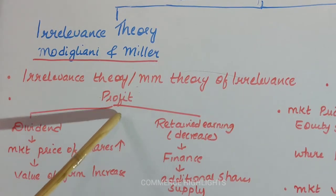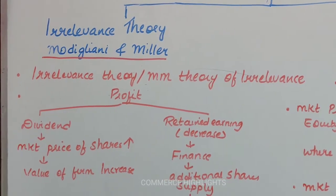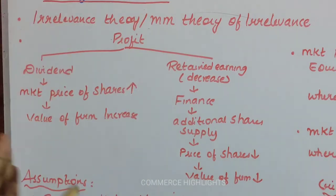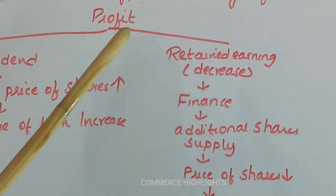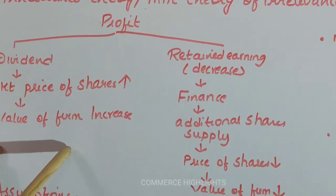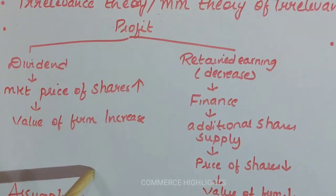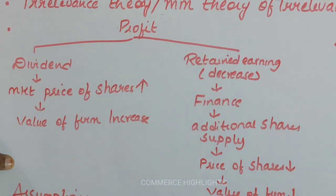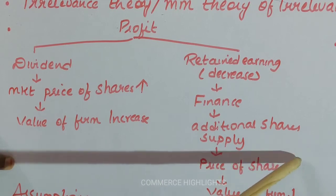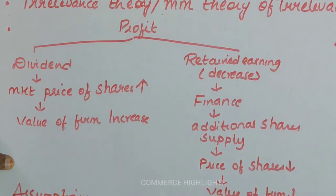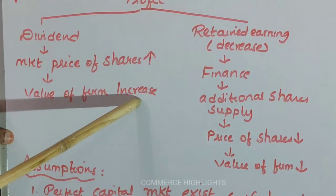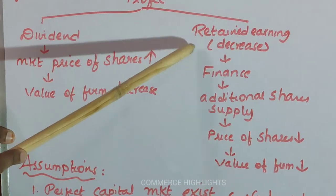When a firm earns a profit and that profit is distributed as dividend, the market price of the share increases and the value of the firm also increases. However, on the other side, when you distribute profit as dividend, your retained earnings get decreased. You will not have sufficient finance to fund your activities, so you issue additional shares. When the supply of additional shares increases, the price of shares decreases and the value of the firm again decreases. So whatever increase in value obtained by giving dividend is offset by the decrease in value due to the decrease in retained earnings.